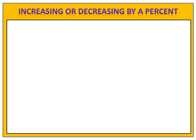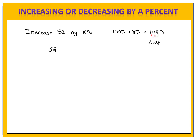The next topic we must talk about to be prepared to work with exponential functions is how to increase or decrease by a percentage. Suppose we want to increase the number 52 by 8%. If we increase by 8%, it means we have 100% of what we started with plus 8% more — that's 108%, which converts to the decimal 1.08. Taking 52 times 1.08, we find the result 56.16.